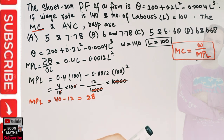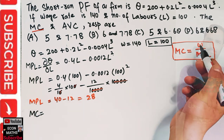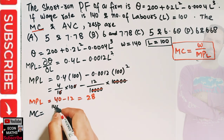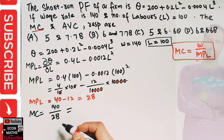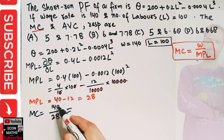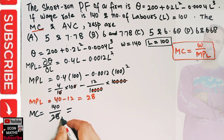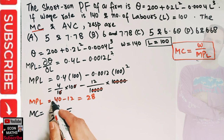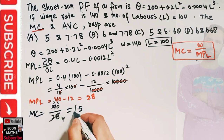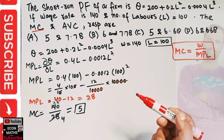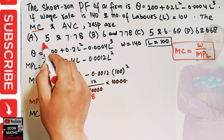The marginal cost is simply wage rate divided by marginal product of labor. The wage rate is 140 and marginal product of labor is 28. So marginal cost = 140 / 28 = 5. So the marginal cost is 5.